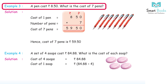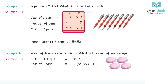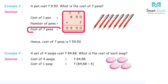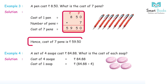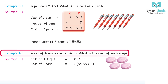Example 3: a pen costs Rs. 8.50. What is the cost of 7 pens? Cost of one pen: Rs. 8.50. Number of pens: 7. Cost of 7 pens = Rs. 59.50.